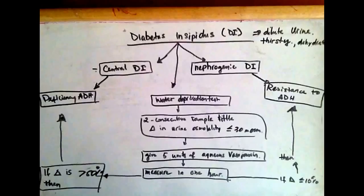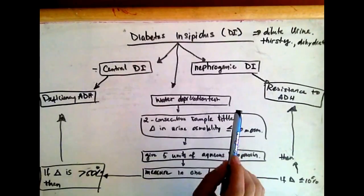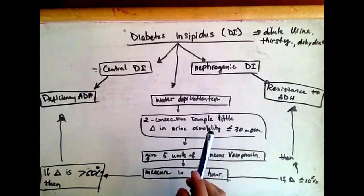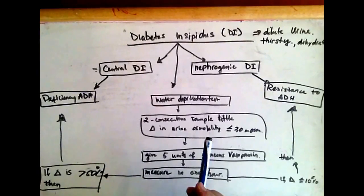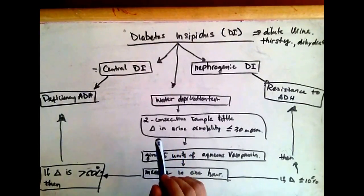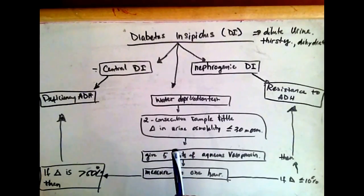That's nephrogenic diabetes insipidus. Vasopressin, or antidiuretic hormone, is responsible for the maintenance of water balance by regulating water absorption in the kidney.